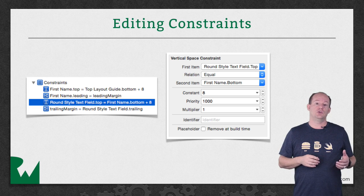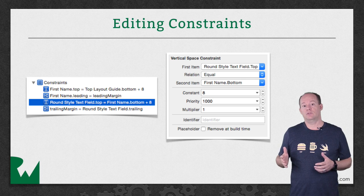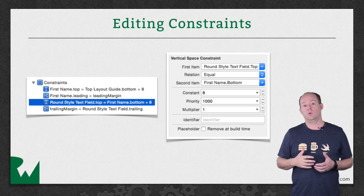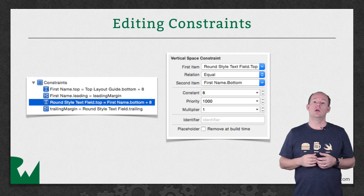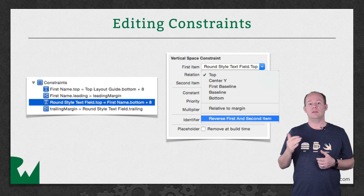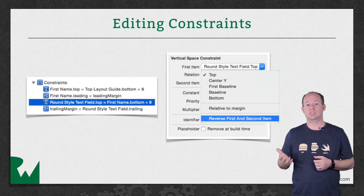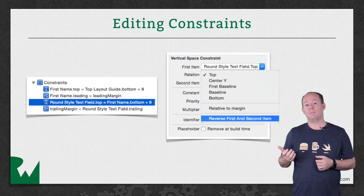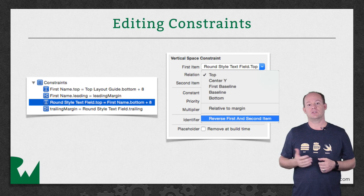You've already seen that you can create a constraint to align the leading edge of two views, or the leading edge of one view to the trailing edge of another. But you can also align the top of one view with the center Y of another view, because they're in the same direction. To create this kind of constraint, first create a constraint between the top of the two views, and then come here and leave one item as top and change the other item to center Y. I'll explain identifier and placeholder in the demo, but to understand multiplier, let's look a little deeper at constraints.